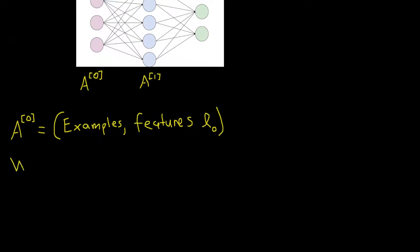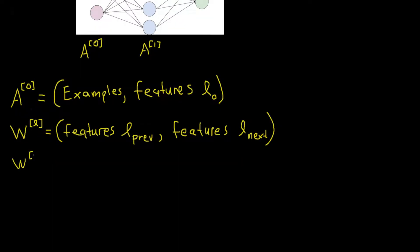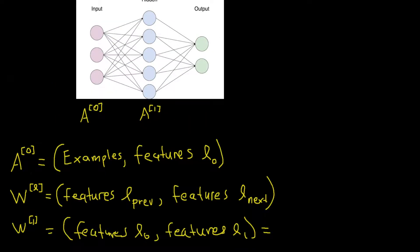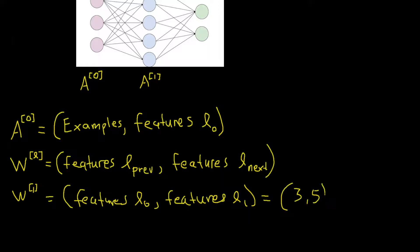And if we look at the weights, we have in general weights for layer L. That would be the features in the L layer previous and the features for the L next. So if you look at W^[1], then that would be the features L0, features L1. In this case, we have 3 input and we have 5 in our hidden layer, so that would be (3, 5) in this case.